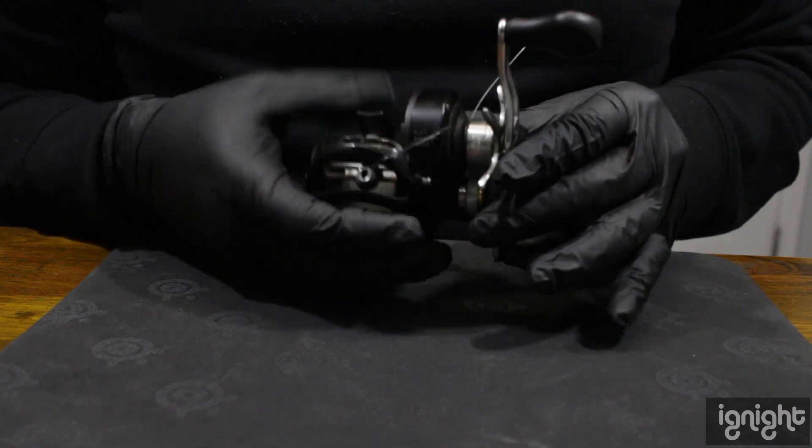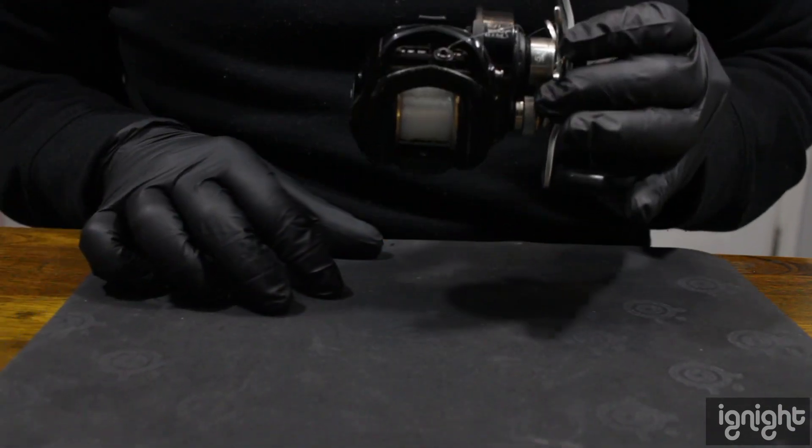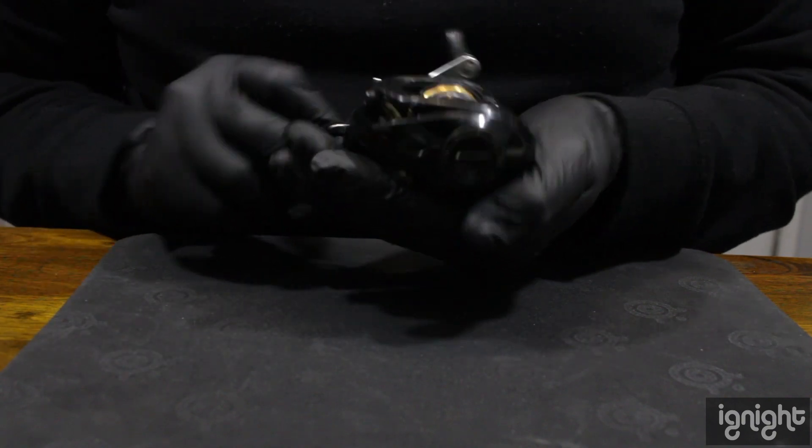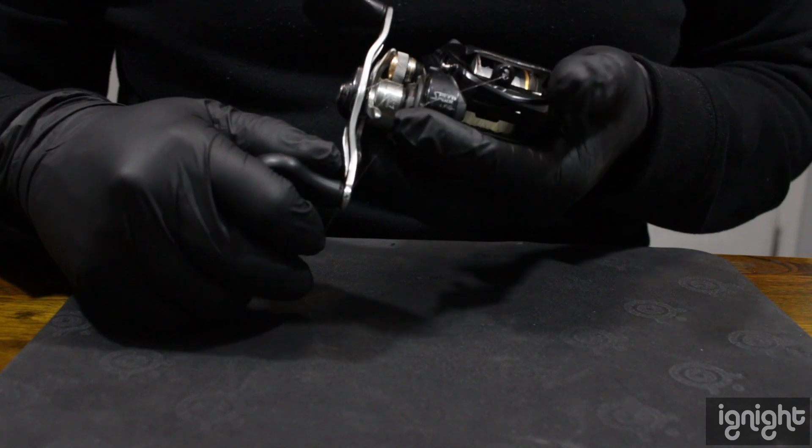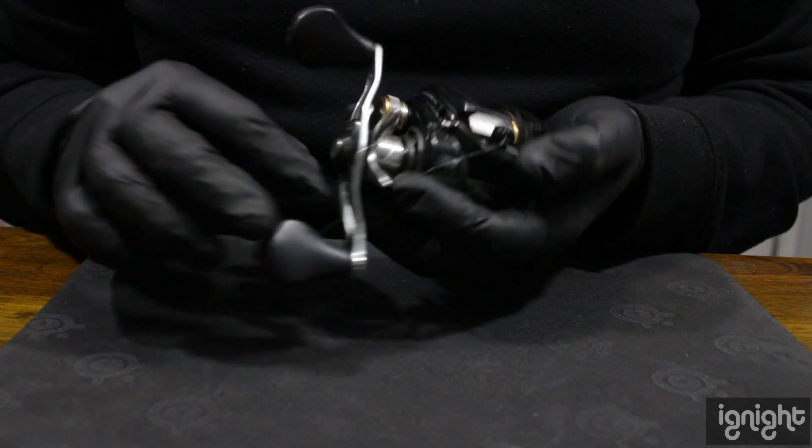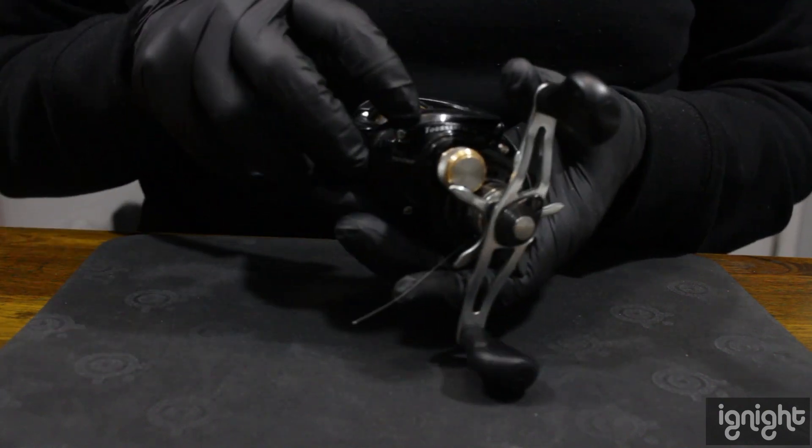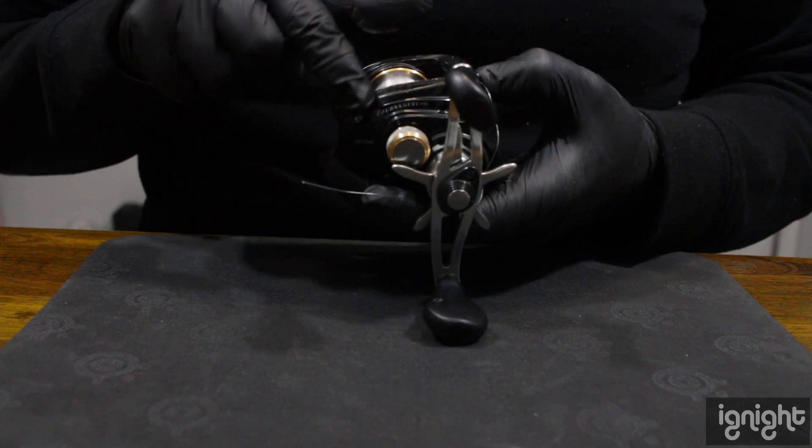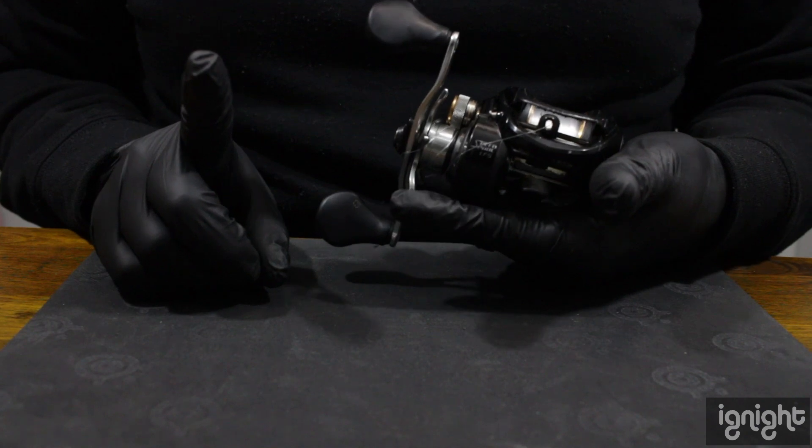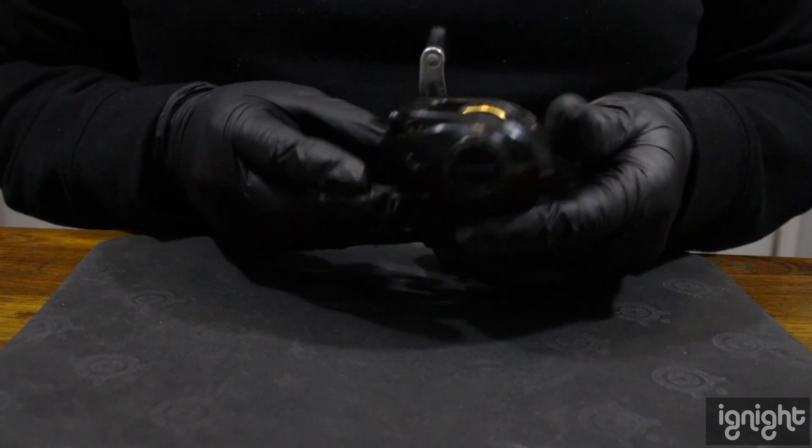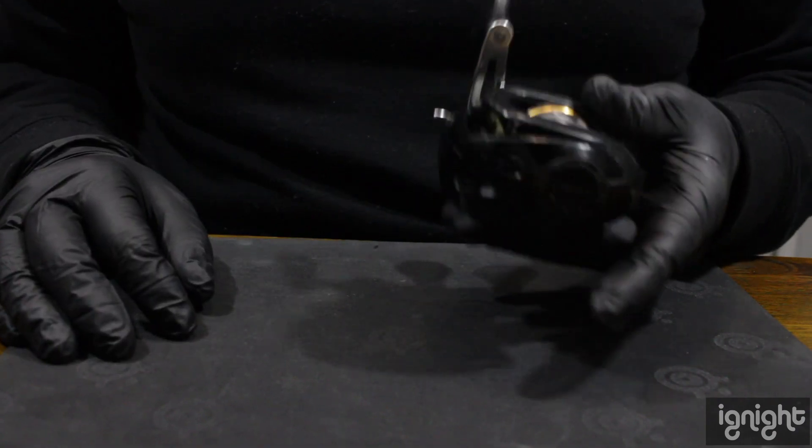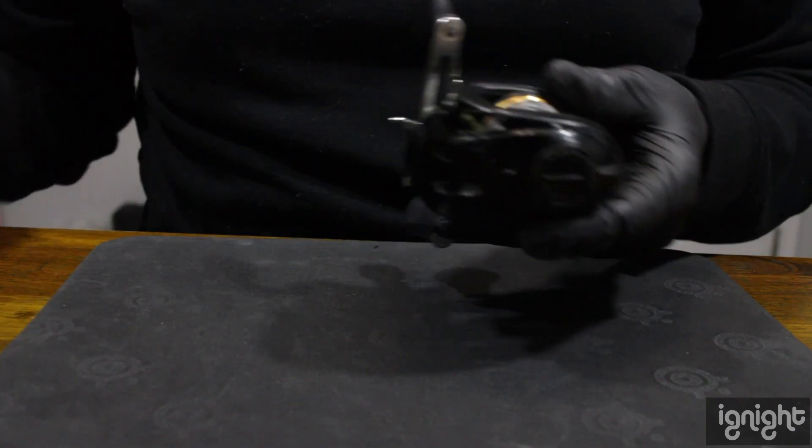This one I usually use for my jerkbaits or anything around that weight class, also for light lures. This reel is the one that I use the most when I'm using the smaller baits. I can tell it's already going to be done pretty soon. I'll be buying a new one.